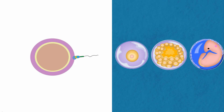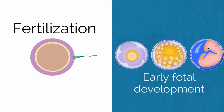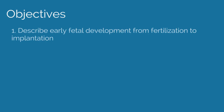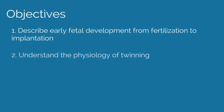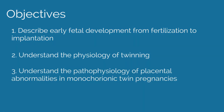Multiple gestations arise from the deviation in the process of fertilization and early fetal development. They carry unique obstetric concerns compared to singleton gestations. The objectives of this video are to describe early fetal development from fertilization to implantation, understand the physiology of twinning, and understand the pathophysiology of placental abnormalities in monochorionic twin pregnancies. To review the clinical management of multiple gestation pregnancies, please view the AFCO clinical education video, Topic 20.